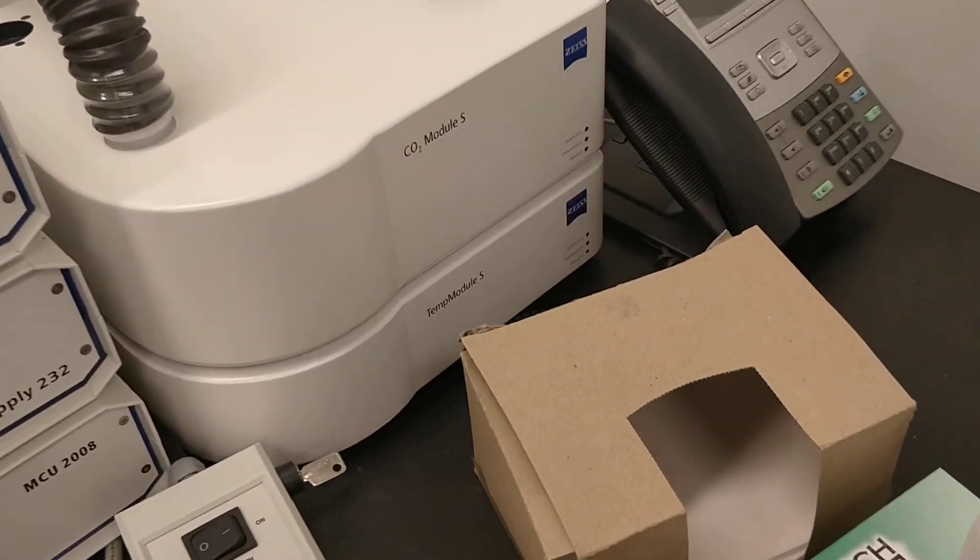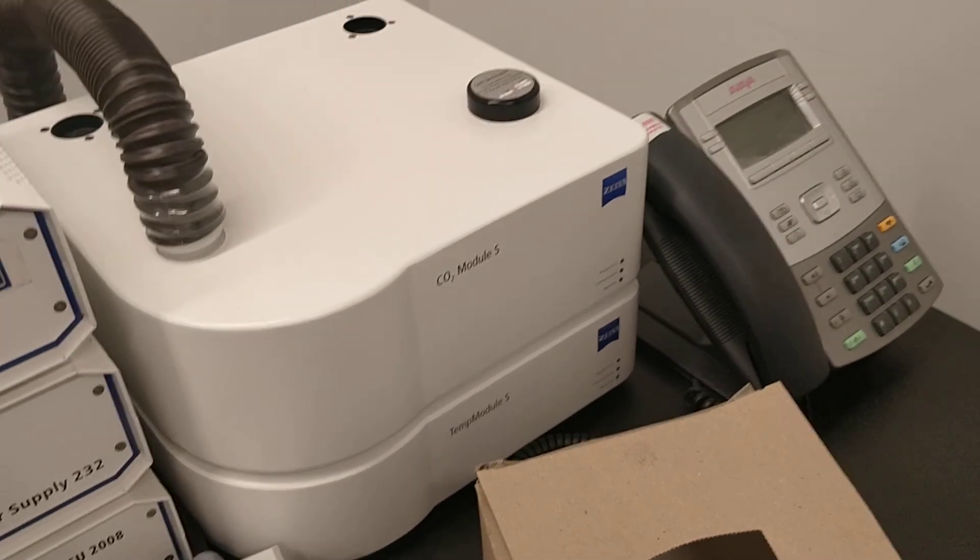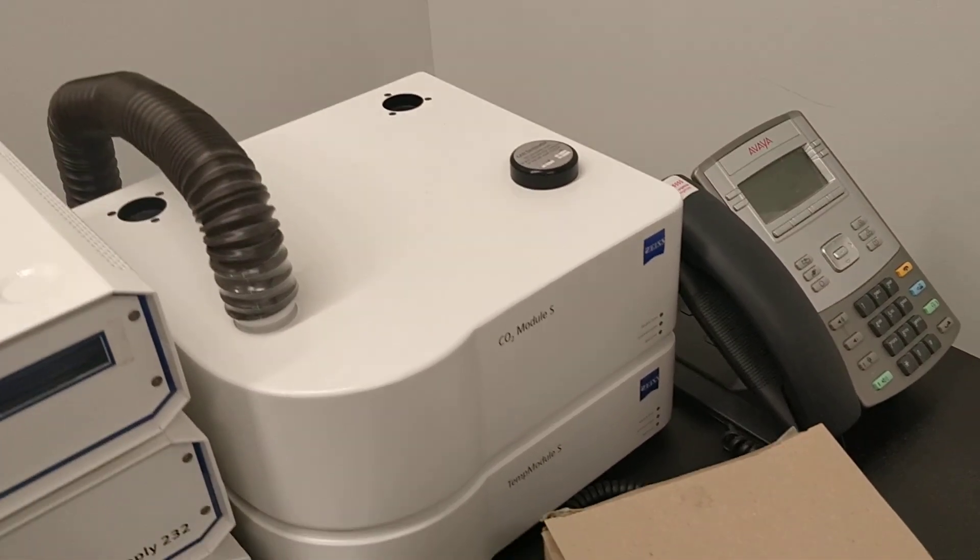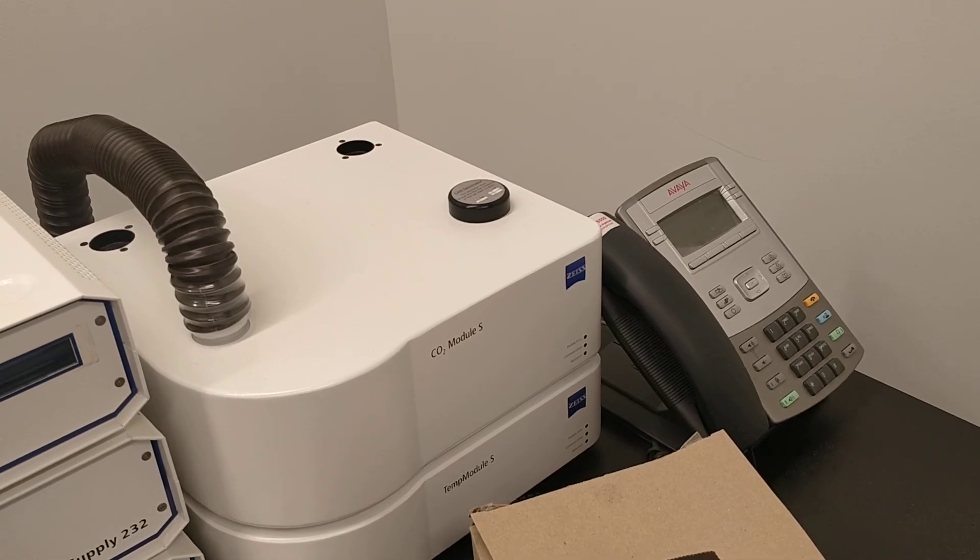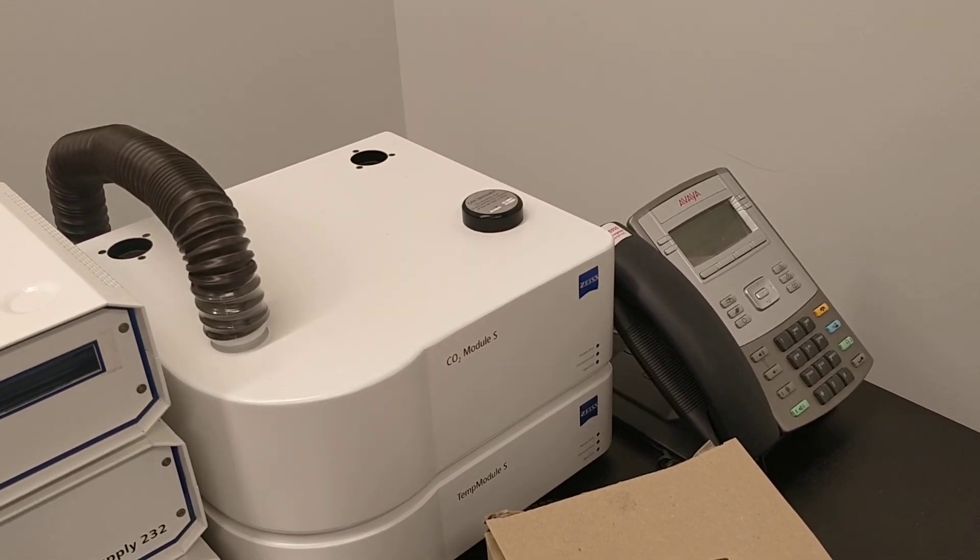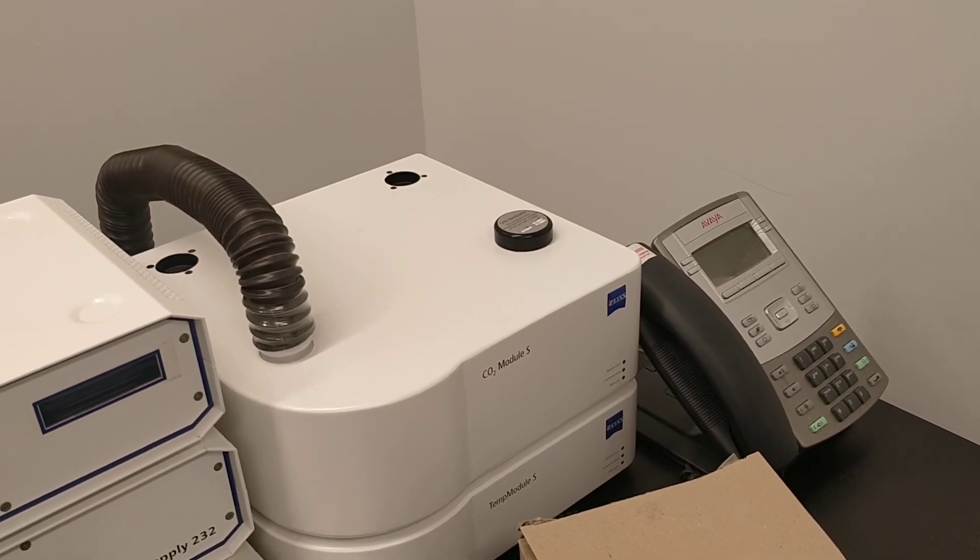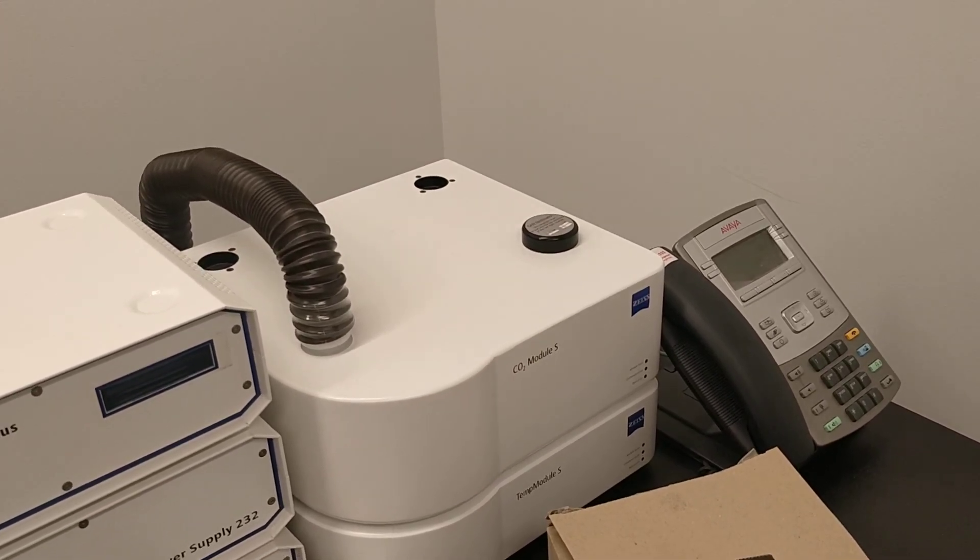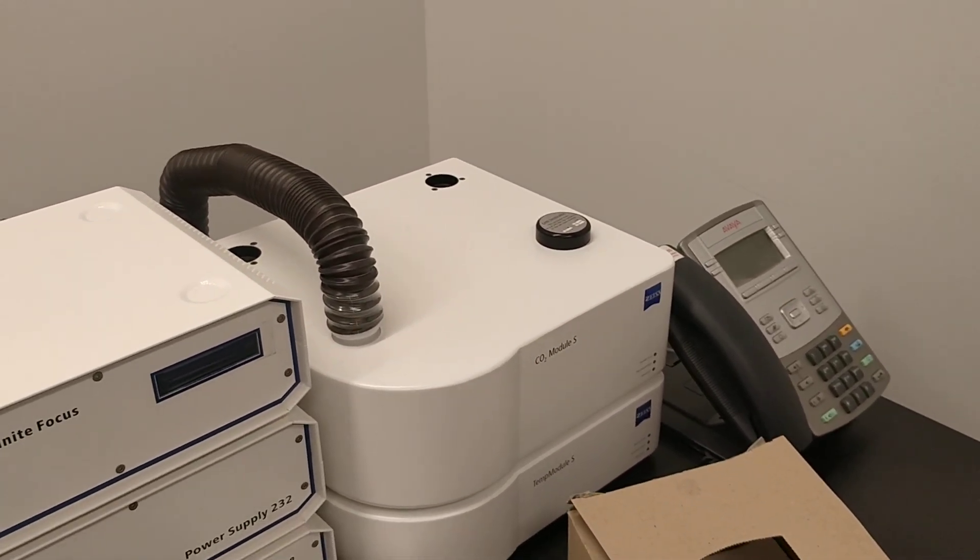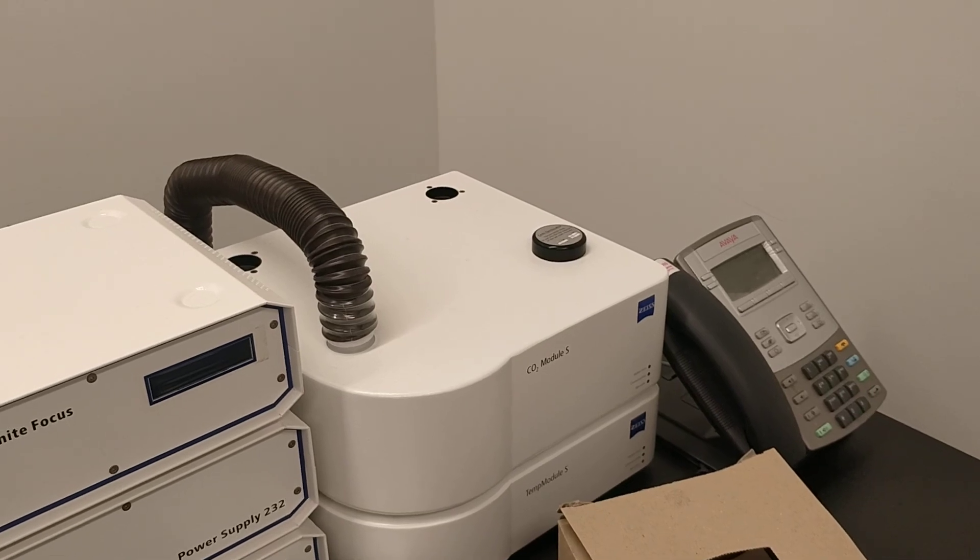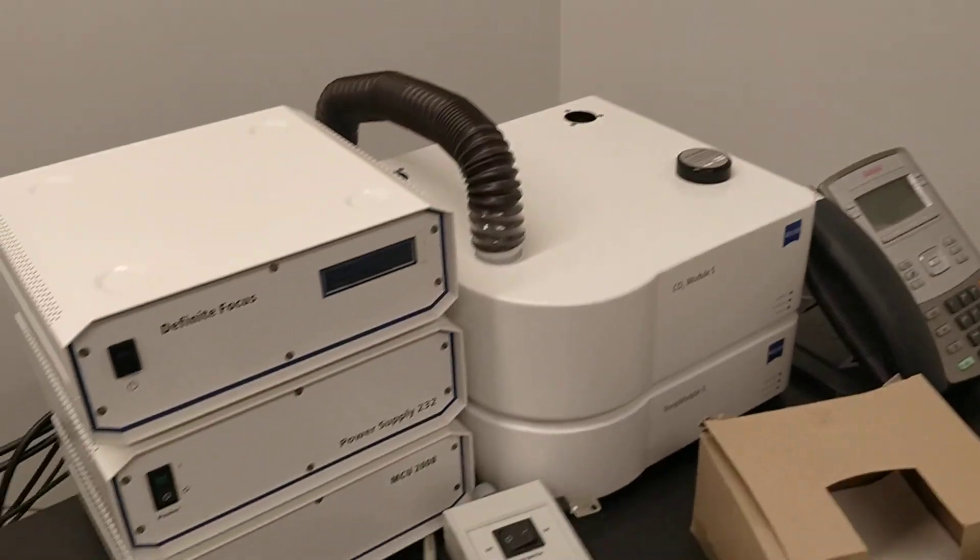And then here you do have the CO2 and the temperature control. There is one button behind to turn it on and off. Usually they are turned off because most of us do work with fixed sample. So you don't really have to worry about it. If you are thinking about imaging live sample over a certain time lapse, we would highly recommend you to consult with us first because there are quite a few details that we have to make sure and the experiment setting is usually a bit more complicated.